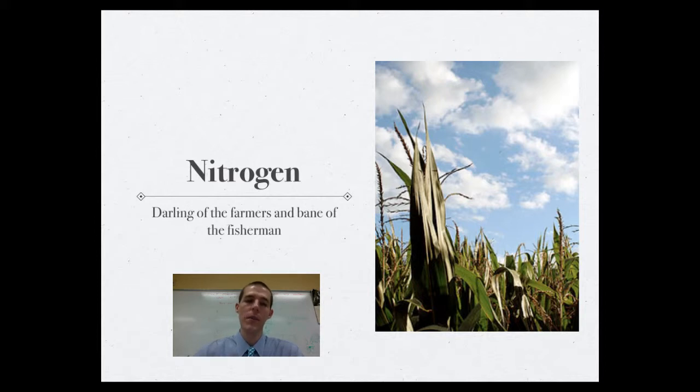Nitrogen is the darling of farmers and the bane of fishermen. Here's why. With the green revolution, Norman Borlaug in the 40s to the 70s figured out how to use nitrogen as a fertilizer. And the thing is, plants love nitrogen. In terrestrial ecosystems, nitrogen is a limiting factor. So applying a lot of nitrogen to the soil causes plants to grow up very rapidly. So excellent, great for farmers, can support a lot of people. So the problem is...